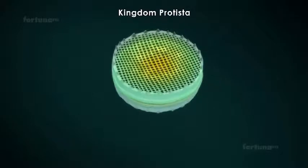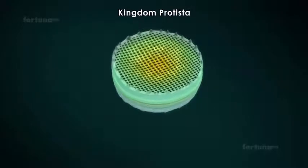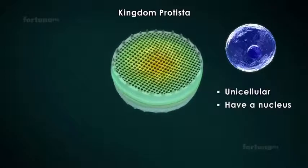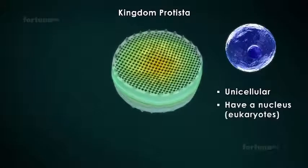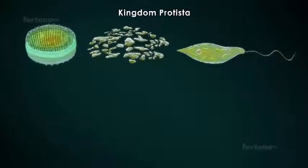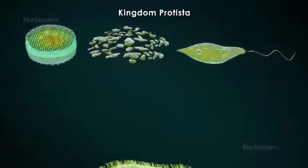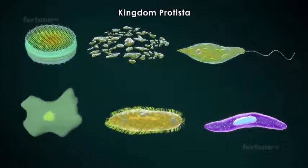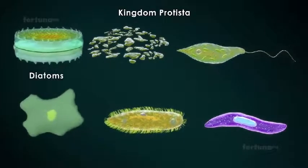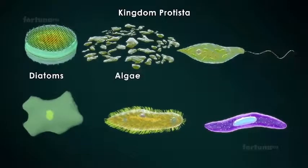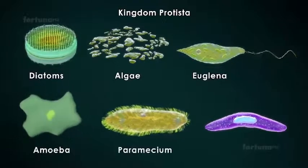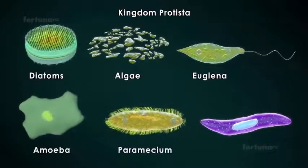Kingdom Protista is next. The organisms within this kingdom are also unicellular, but they have a nucleus. Cells of this type are referred to as Eukaryotes. Most members of this kingdom can, like plants, undergo photosynthesis and produce their own food, and like animals, will have locomotory structures. Most Protista are aquatic and include diatoms, algae, Euglena, and protozoans such as amoeba, Paramecium, and Plasmodium.